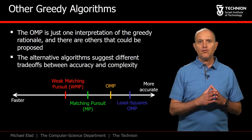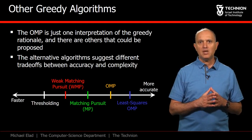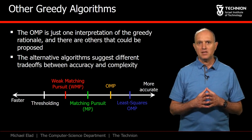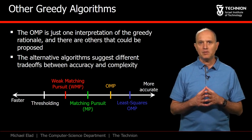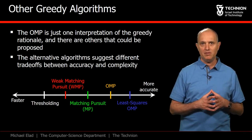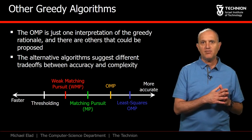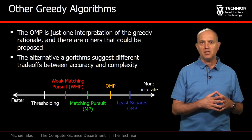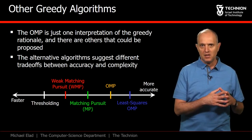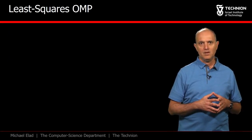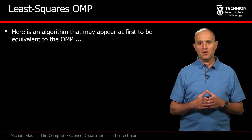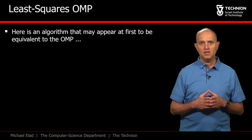Starting from the OMP, we will propose a more complex and thus more accurate method called Least Squares OMP, and then turn to the other direction of proposing several variations that are cheaper and more crude. Here is an algorithm that may seem, at first, to be almost the same as the OMP.